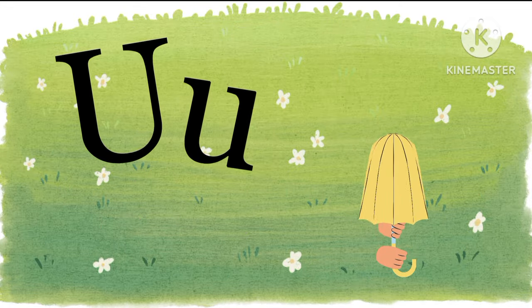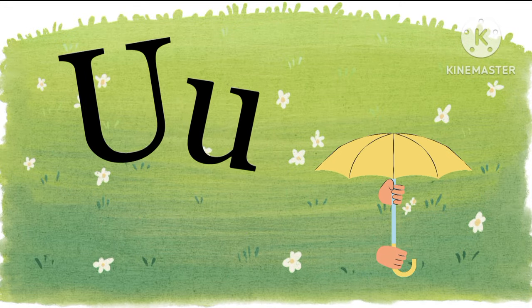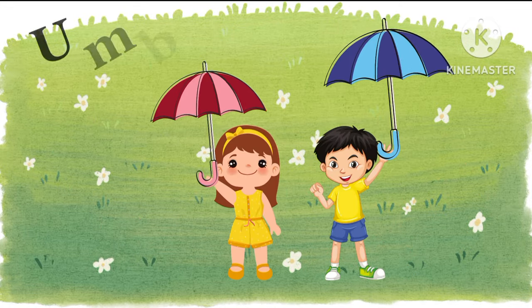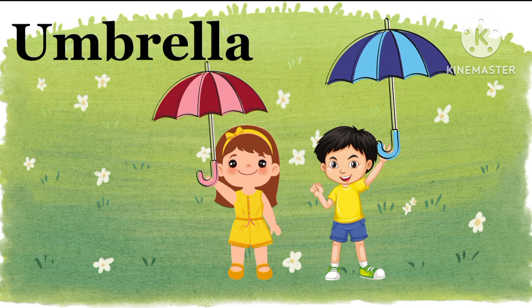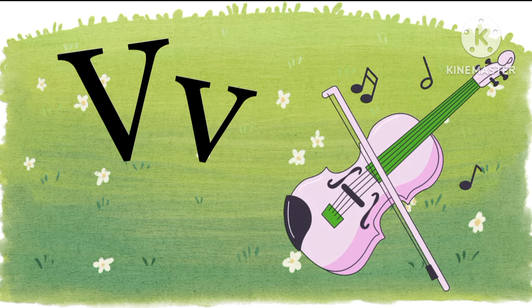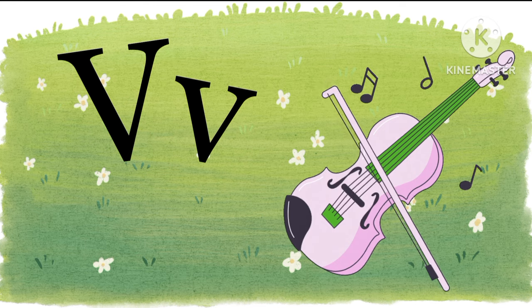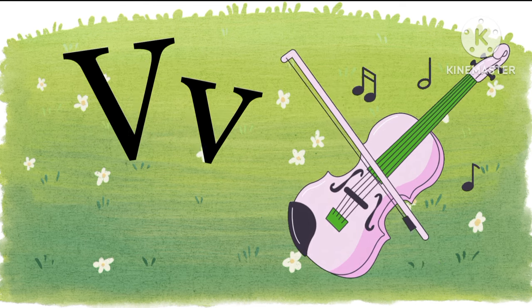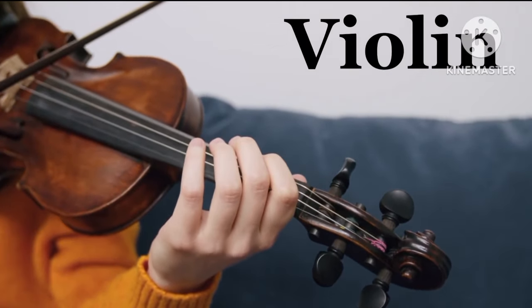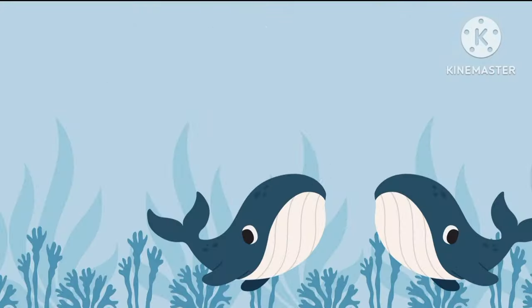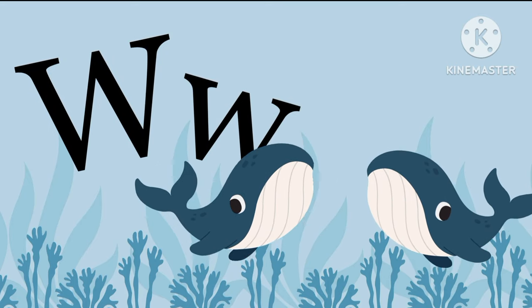U is for Umbrella. U, Umbrella. V is for Violin. W is for Whale.